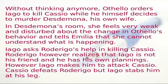In Desdemona's room, she feels very weak and disturbed about the change in Othello's behaviour and tells Emilia she cannot understand what is happening. Iago asks Rodrigo's help in killing Casio. Rodrigo realizes that Iago is not truly his friend and has his own agenda, but Iago manipulates him into attacking Casio. Casio defeats Rodrigo, but Iago stabs him in the leg.